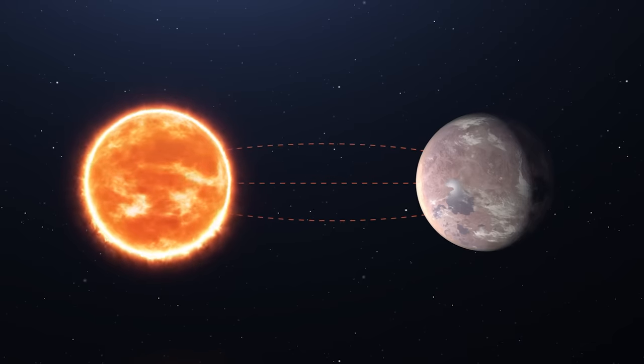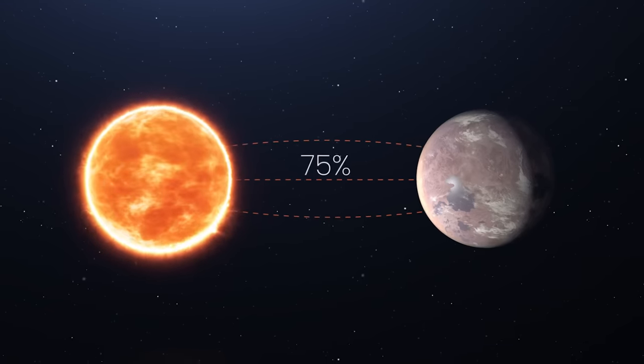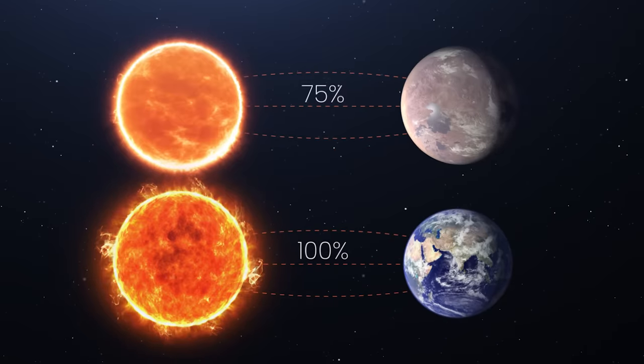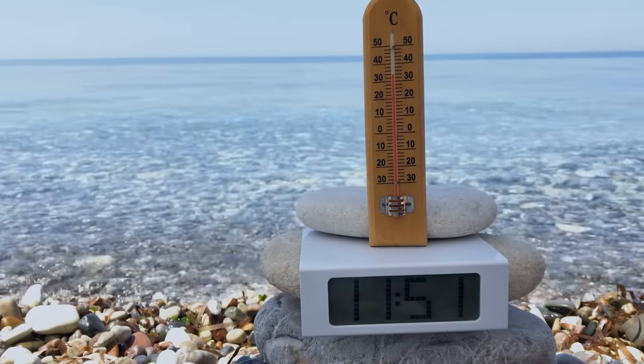Also, the amount of starlight it receives from its host star, which is also a red dwarf, is 75% of the amount of light Earth receives from our Sun, meaning the exoplanet's temperature may be similar to our planet's as well.